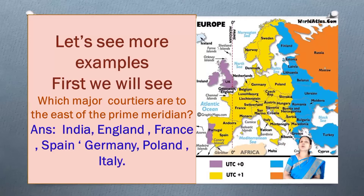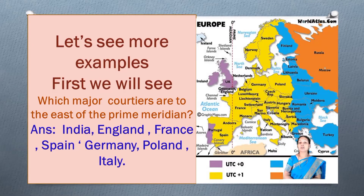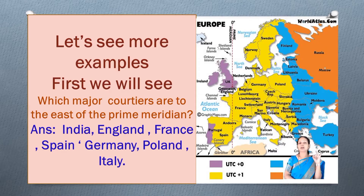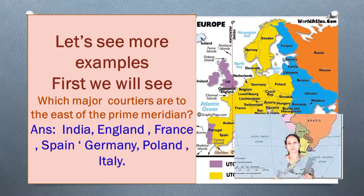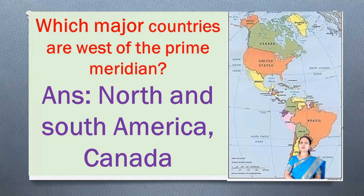Let's see some more examples. First, we will see which major countries are to the east of the prime meridian. The countries located to the east of the prime meridian include India, England, France, Spain, Germany, and Poland. Which major countries are west of the prime meridian? North and South America, and Canada.